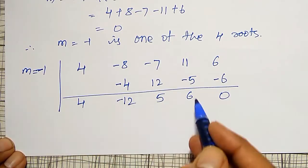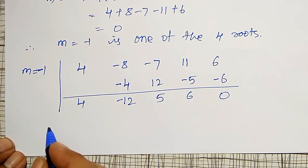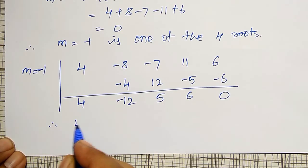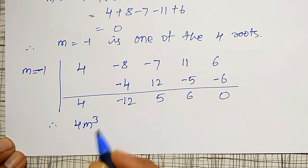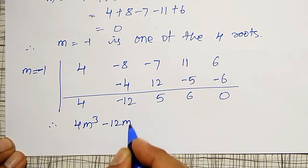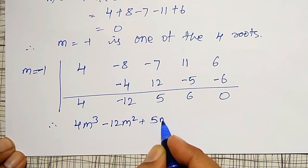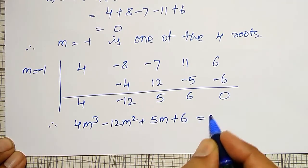three roots are nothing but the coefficients of cubic equation. Therefore, 4m^3 - 12m^2 + 5m + 6 = 0. Biquadratic I have reduced to cubic equation.